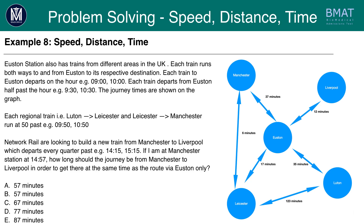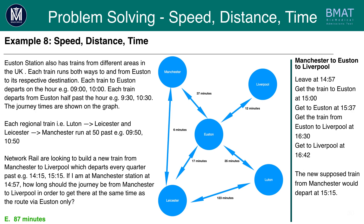Have a go at this part now by pausing the video. The answer you should have gotten here is E, 87 minutes. There are two routes from Manchester to Liverpool: Manchester to Euston to Liverpool, and Manchester to Leicester to Euston to Liverpool. We're told to use a route that goes via Euston only, so we ignore the second route. Let's go with Manchester to Euston to Liverpool.